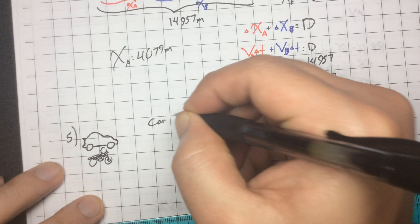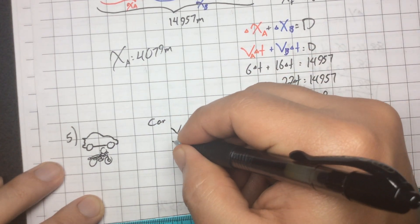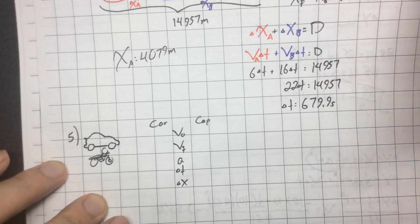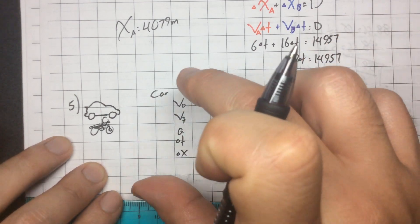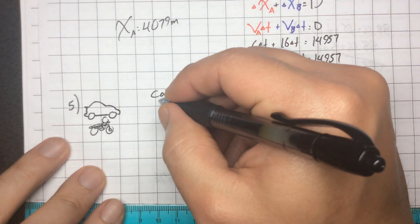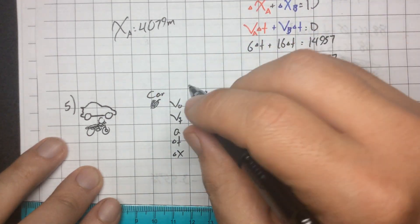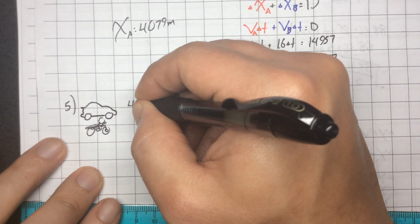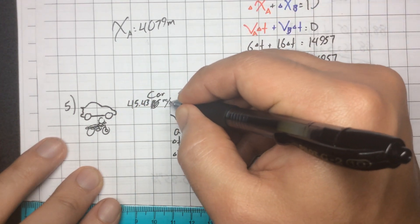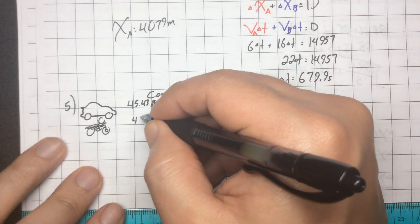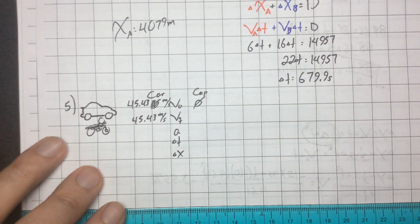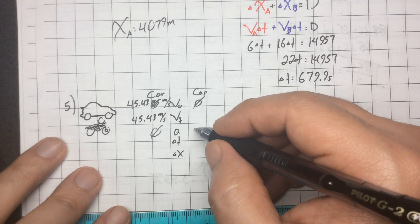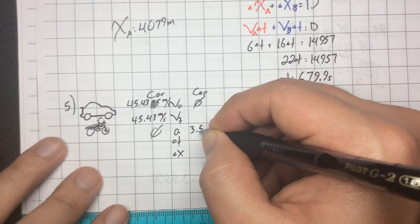This isn't the only way to solve the problem — we can do graphing or the physics-y way, but this is the mathematical setup. The initial velocity of the cop is zero. The initial velocity of the car in my problem is 45.43 meters per second — that's the exact same velocity at the end since the car doesn't speed up or slow down. The cop does change speed — I don't know the final speed of the cop yet, but the cop has an acceleration of 3.58 meters per second squared.